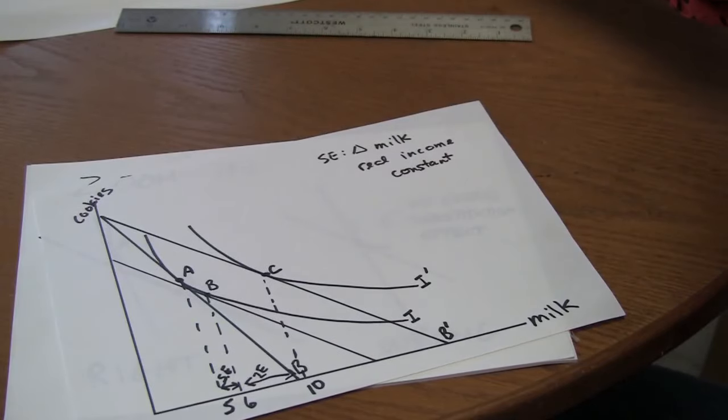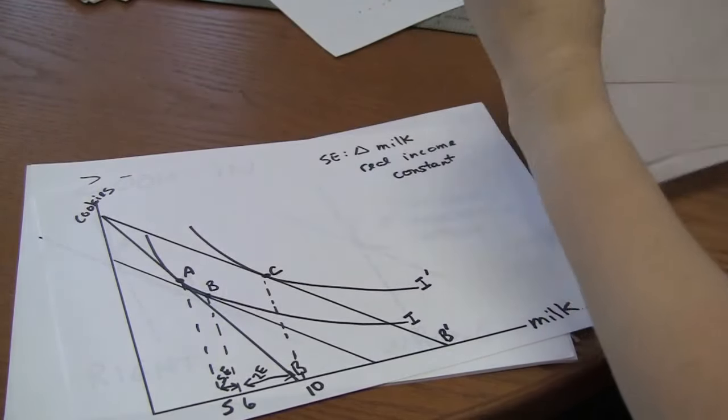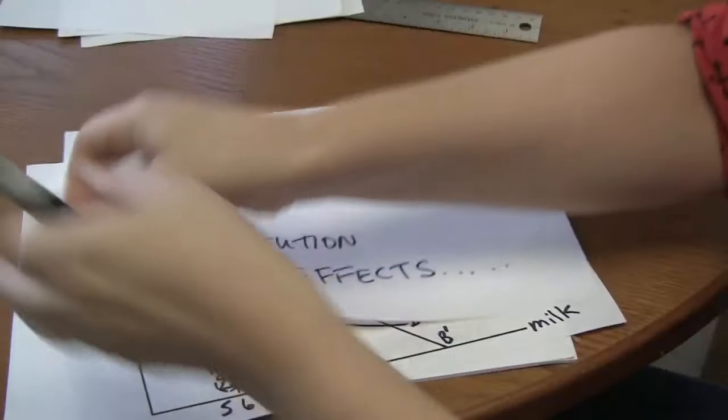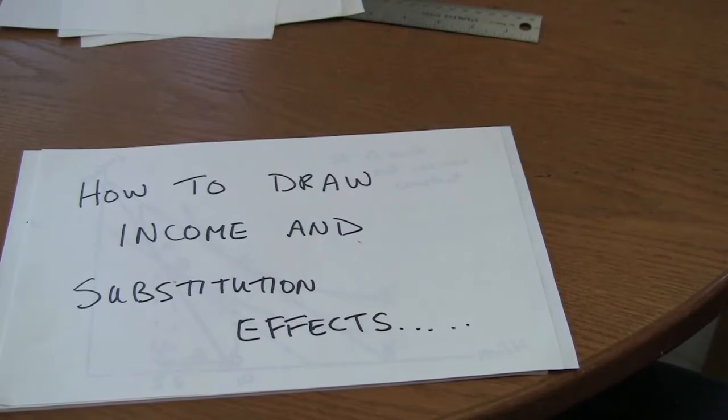That is how to draw income and substitution effects by Mumbling Professor.